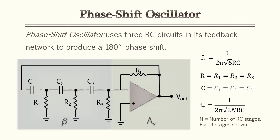The phase shift oscillator is a very common oscillator — found not just in oscillator references but also in op-amp books. It uses three RC circuits in its feedback network to produce the 180-degree phase shift, and utilizes an op-amp amplifier. You can find the resonant frequency with the given equations. Be aware: you can have multiple RC stages, and more stages will also affect the resonant frequency.